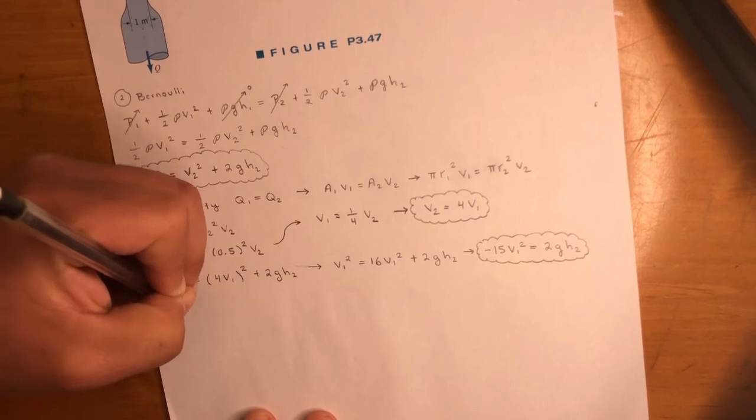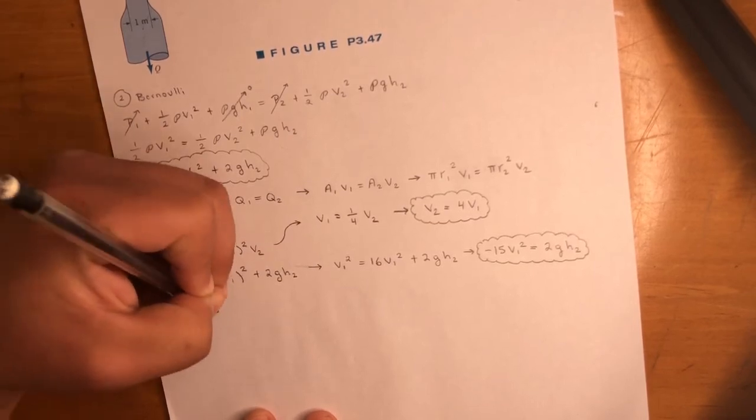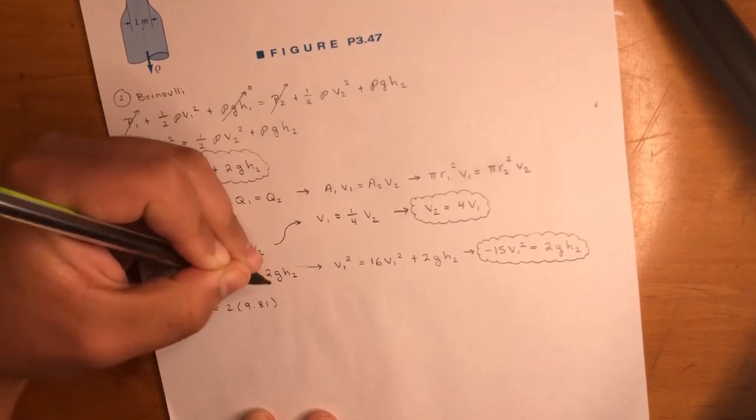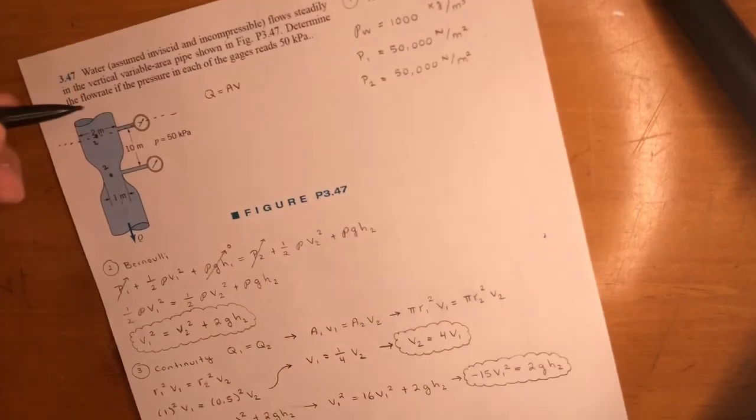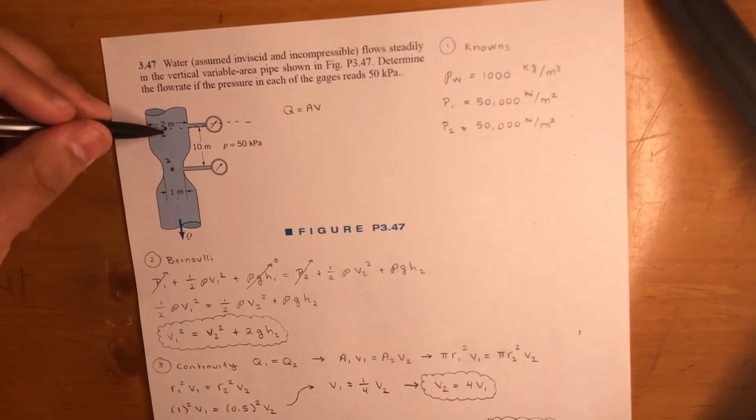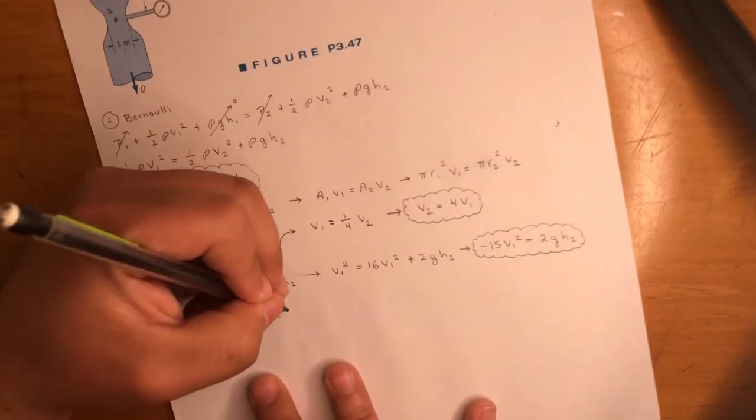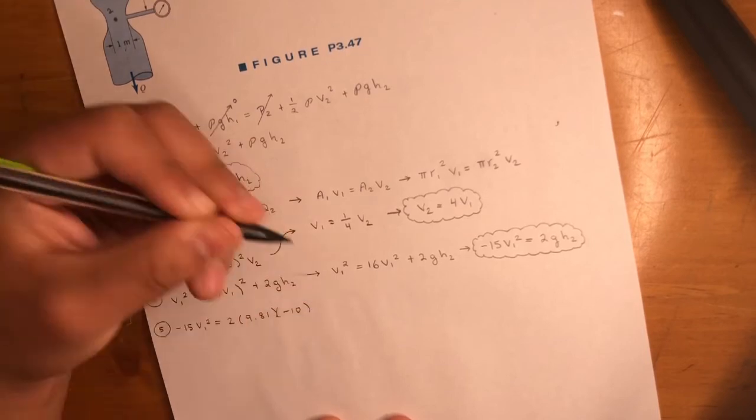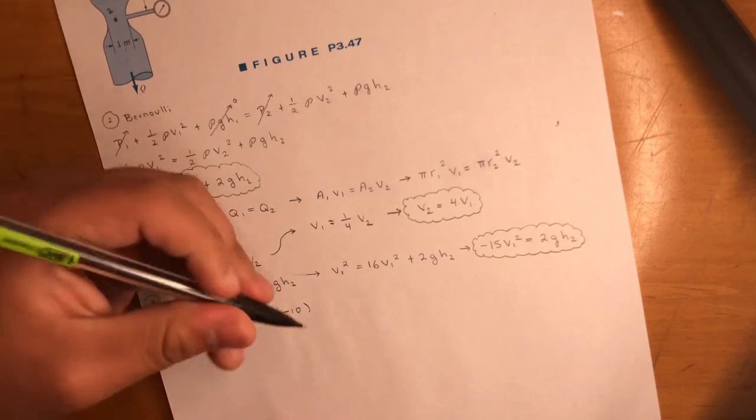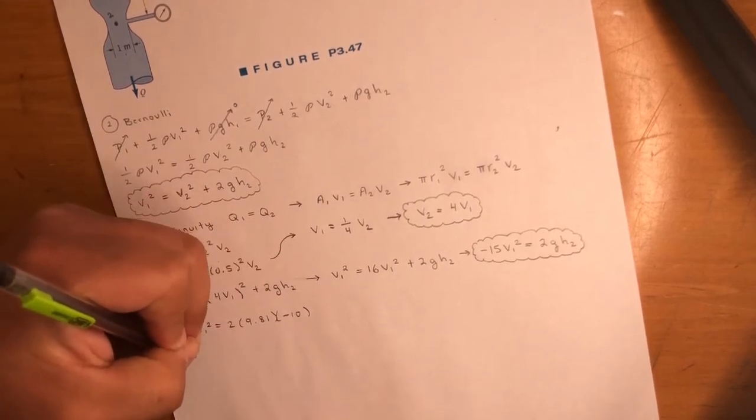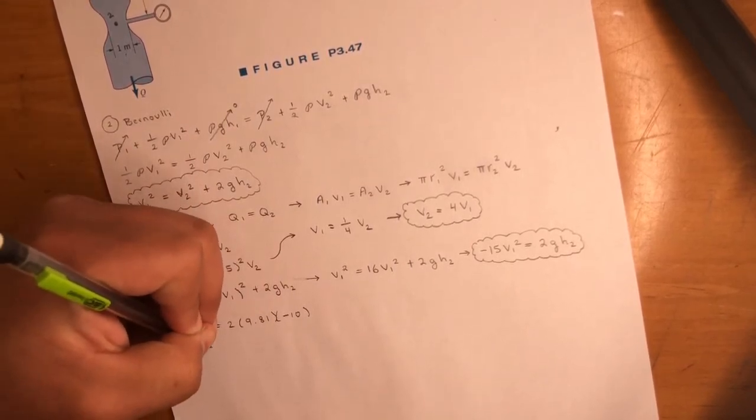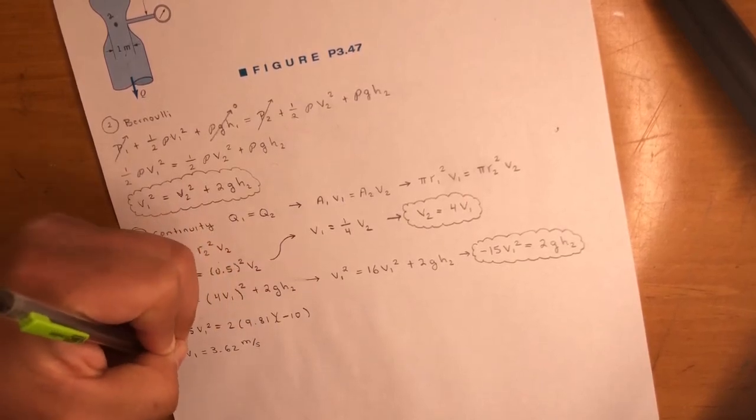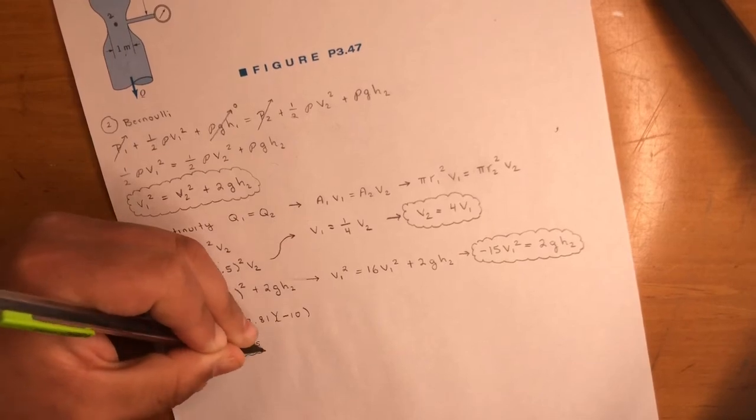Now since we have everything, we can actually keep going. Step five: we got negative 15 V1 squared is equal to 2 times 9.81, and again, we're 10 meters under the datum, so that means this is a negative 10. I'm not gonna include the units. If you do the math here, you will get V1 is equal to 3.62 meters per second. So that's V1.